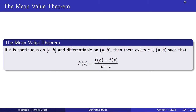What this means is that if you have a continuous differentiable function, then on an interval, the average slope of the function on that interval is equal to the instantaneous slope of that function at some point in that interval.